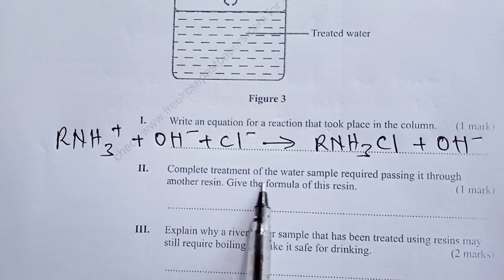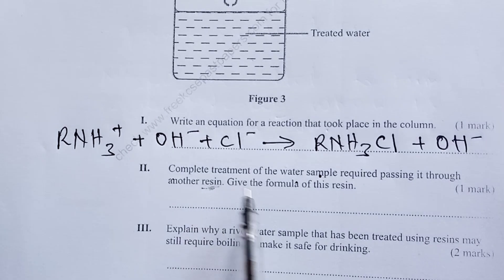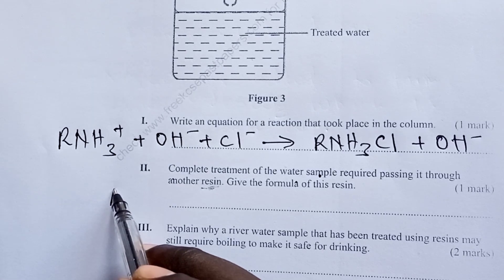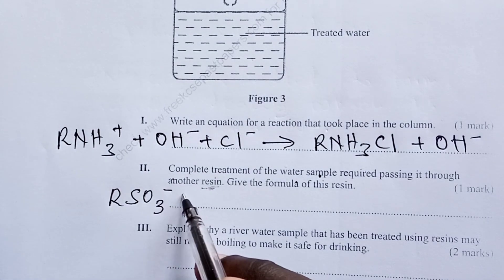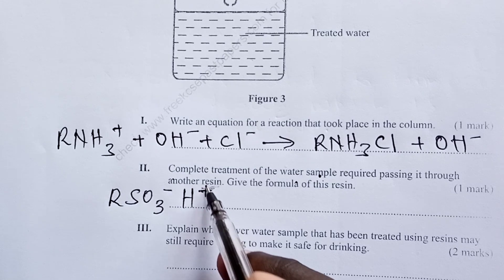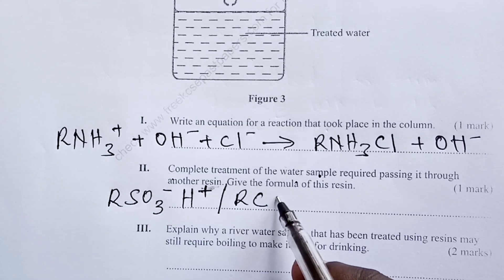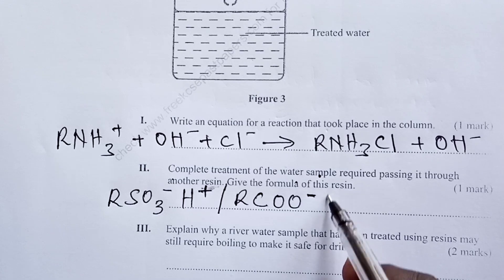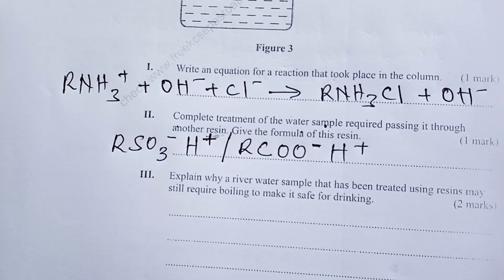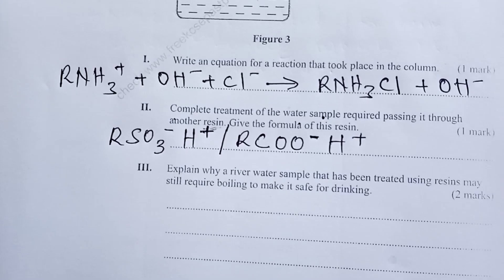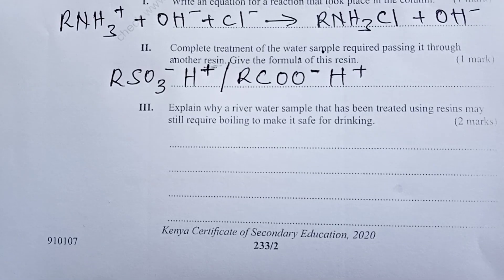Part 2: complete treatment of the water sample required passing it through another resin — give the formula of this resin. Those who rely on common revision textbooks may be in for a rude shock, as this formula is not found in most common books. The other resin has a different formula that a candidate who wants to pass with flying colors must research to know.